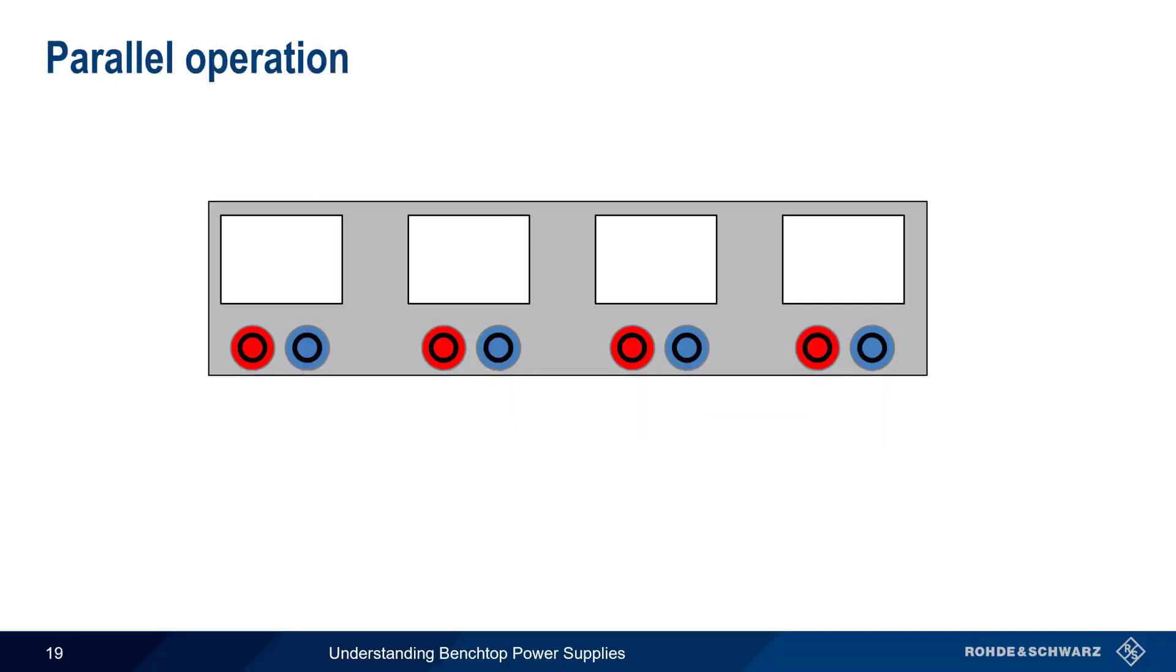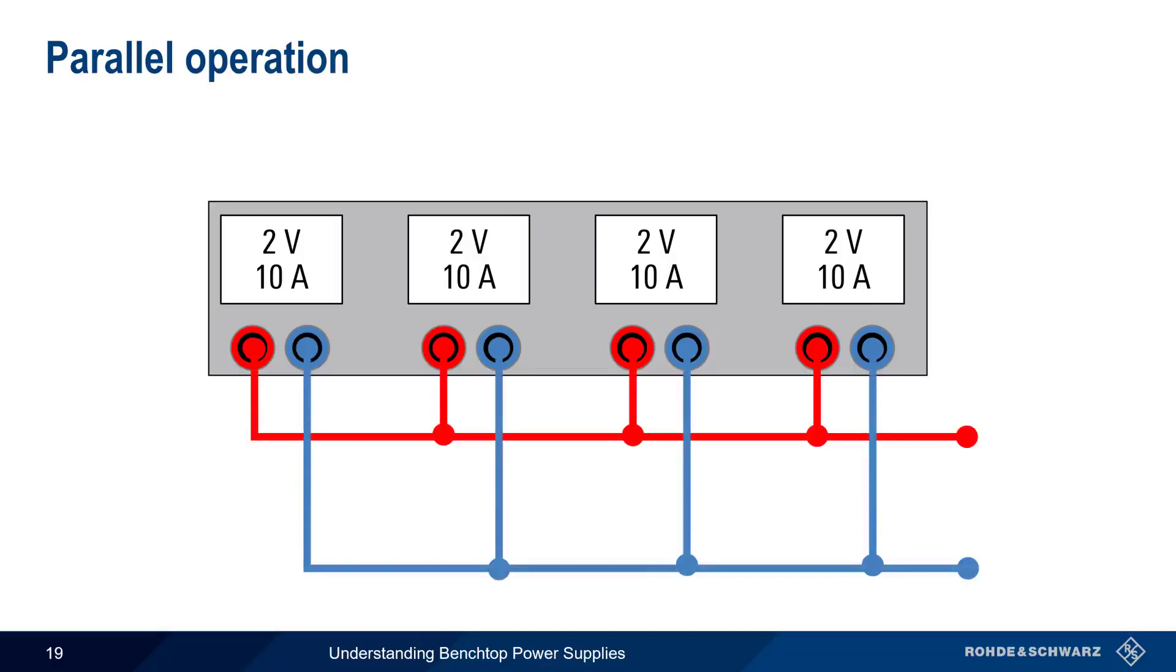Now let's look at parallel operation, which is used to produce higher currents. In this example, our channels are set to 2 volts, but each channel can only source up to 10 amps. Combining these channels in parallel means that we still have only 2 volts across the load, but the combined channels can now deliver up to 40 amps through the load.